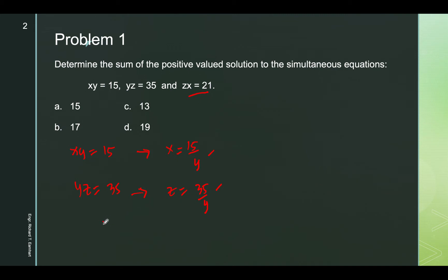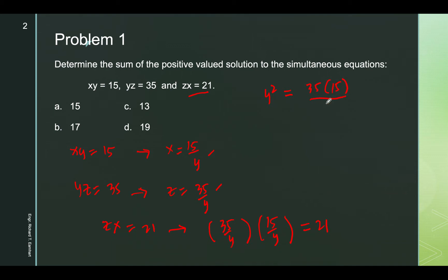So we obtain, for zx equals 21, we replace z by 35 over y and x by 15 over y. On the right-hand side we have 21. Solving, we have y squared equals 35 times 15 over 21, so this will be plus or minus 5.